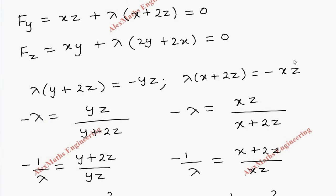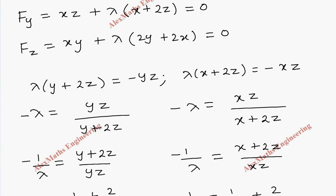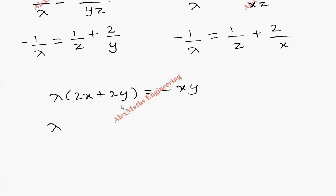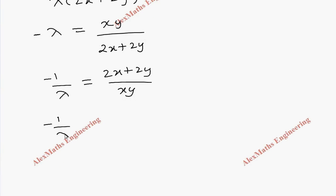From the third equation, lambda(2y + 2x) = −xy, so −lambda = xy/(2x + 2y). Taking the reciprocal, −1/lambda = (2x + 2y)/xy. Dividing individually, −1/lambda = 2/y + 2/x. So we now have three expressions: equation 1: −1/lambda = 1/z + 2/y; equation 2: −1/lambda = 1/z + 2/x; equation 3: −1/lambda = 2/y + 2/x.